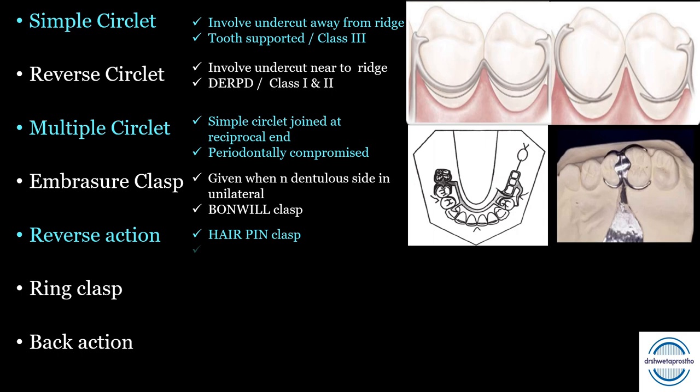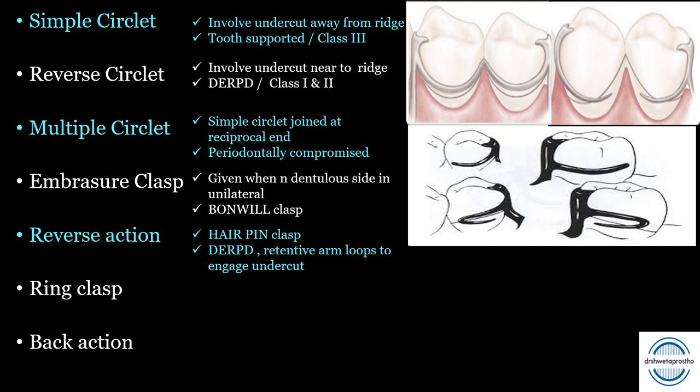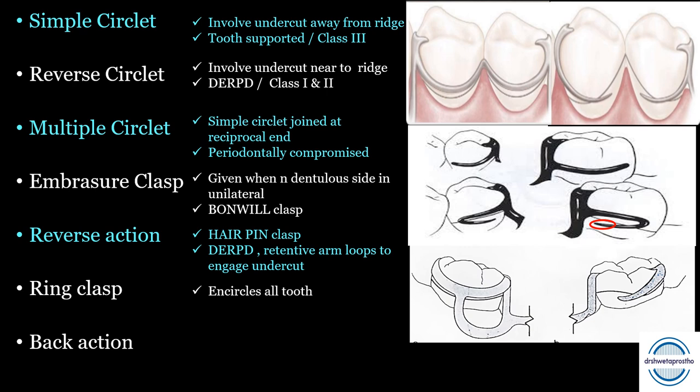In the reverse action (hairpin) clasp, the retentive arm loops to engage the undercut; the apical end provides flexible retention while the occlusal part is rigid. It is given in Kennedy Class 1 and 2 cases where bar clasp or reverse circlet are contraindicated. The ring clasp, like a finger ring, starts from the origin and encircles the whole tooth — mainly given in tilted molars, which is an important MCQ. The back action clasp is a modification of the ring clasp, indicated in distal extension cases (Kennedy Class 1 and 2).